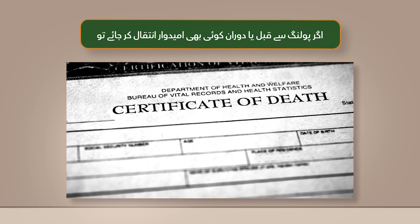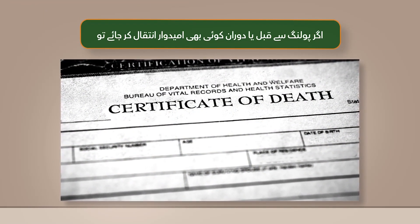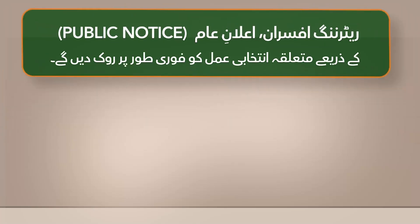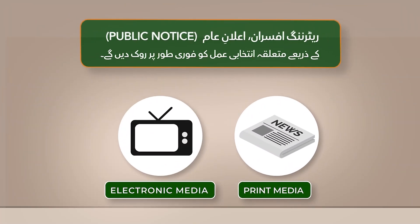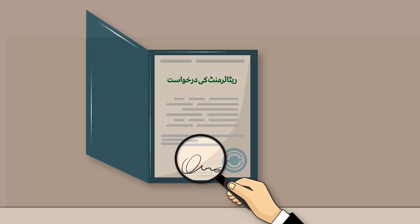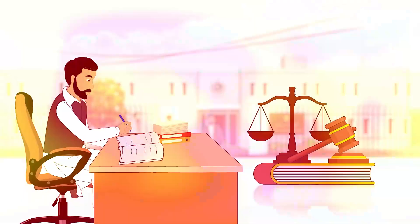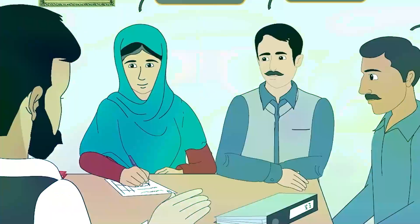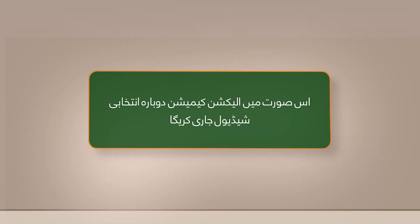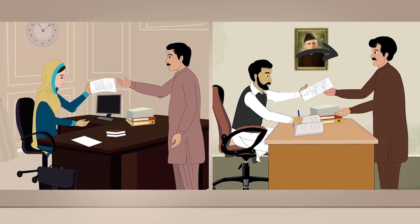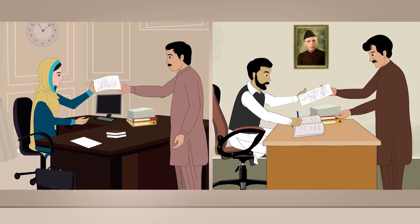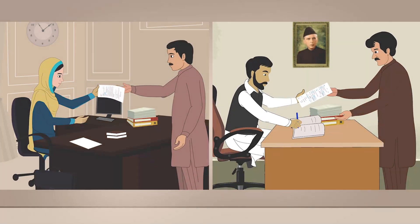Death of a candidate after nomination: In case of a candidate's death before or during polling, the Returning Officers will, through a public notice, immediately halt the election process. In such a situation, the nomination and scrutiny process will have to be carried out afresh as per the procedures laid down in the Election Act 2017. The Election Commission will issue the election schedule again. Other candidates in the concerned constituency will not be required to submit nomination papers and security fees again.